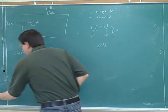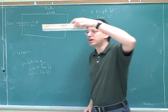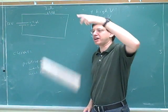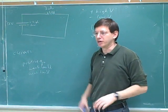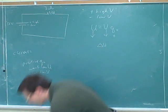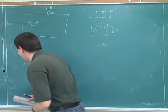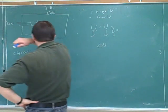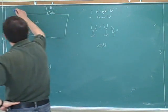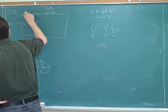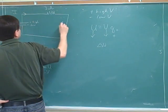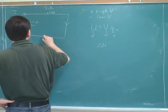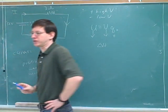If I let go of this eraser, it's not going to move higher, it's going to move lower. Everything wants to get lower. That's a good analogy for potential. That tells us that the current is going to be moving in this direction through the circuit.